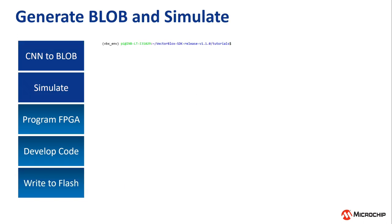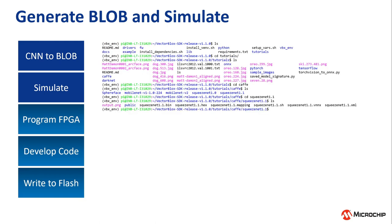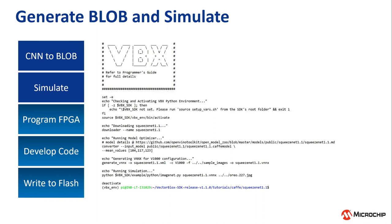Here's how the SDK folder looks. The tutorial directory has many examples of models supported in different frameworks. In this demonstration, we will go through the Caffe directory and run SqueezeNet 1.1. As you can see in the script, there are four main components: the downloader, the model converter, the VINX generator, and the simulator.